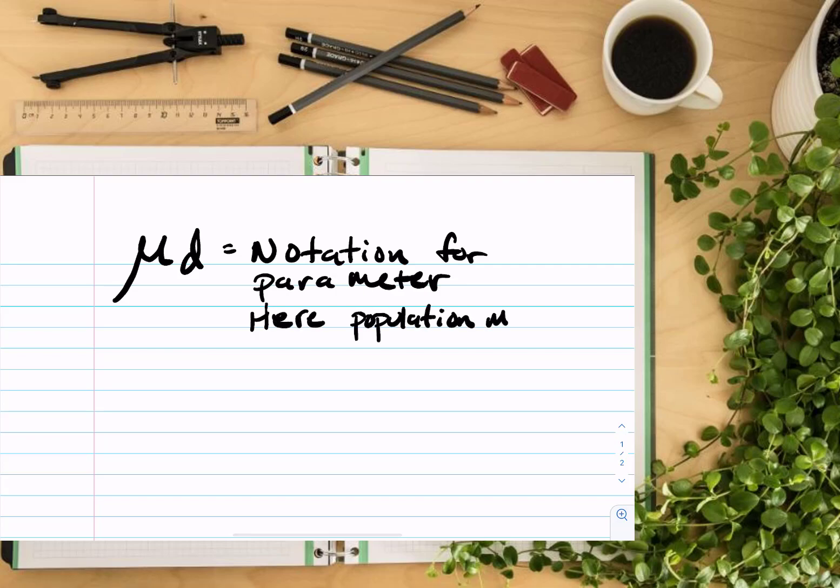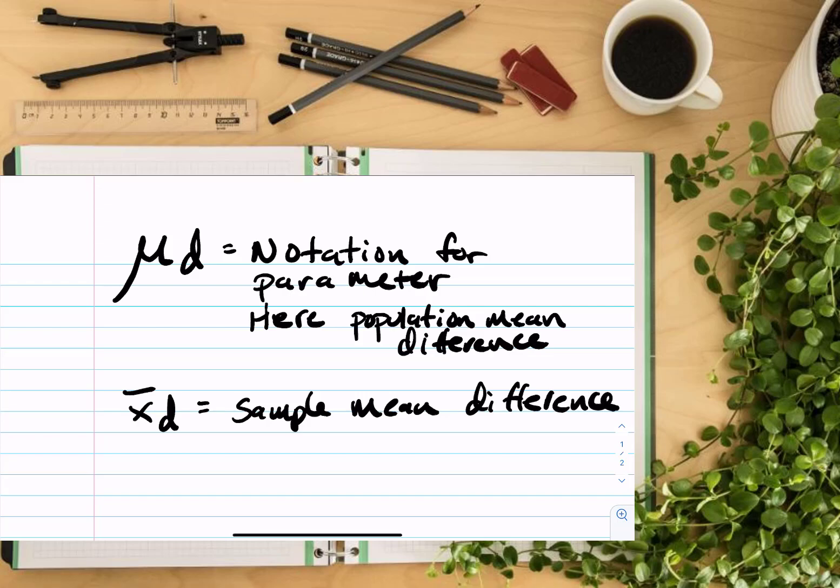So remember the notation for our parameter is mu sub d. That's just the symbol we use, but we call it the population mean pair differences. So then there's x bar sub d, which is the sample mean for the pair differences, and then we have s sub d, which is the standard deviation for the pair differences.